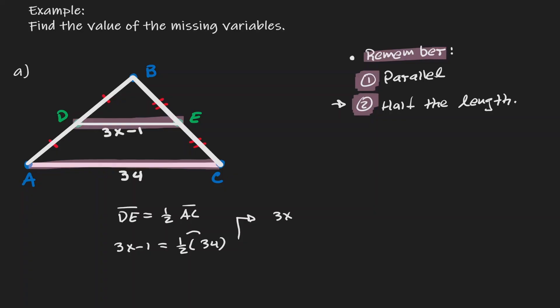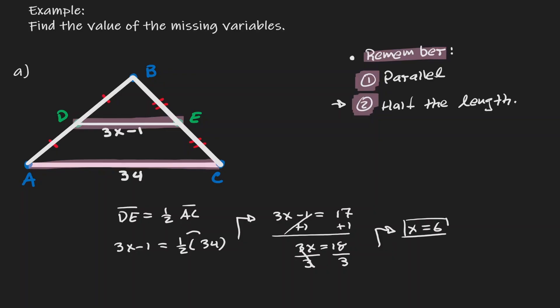After distributing, we get 3x minus 1 equals 17. Then we add 1 to both sides — this cancels out, giving us 3x equals 18. Dividing by 3, we have our final result: x has a value of 6.